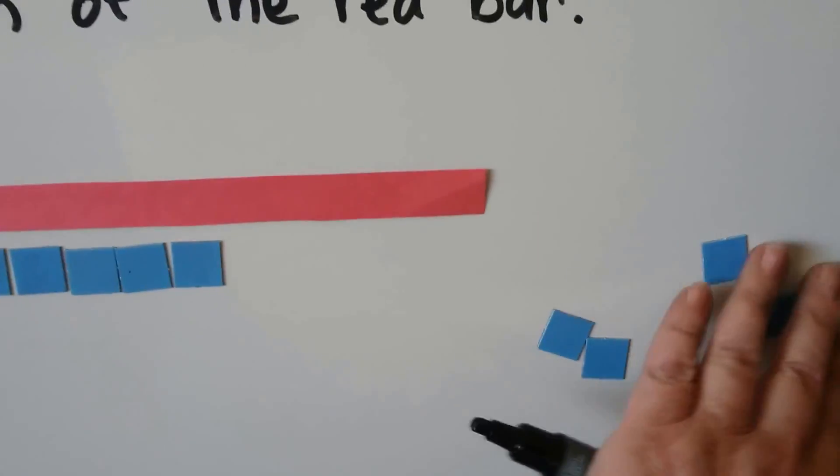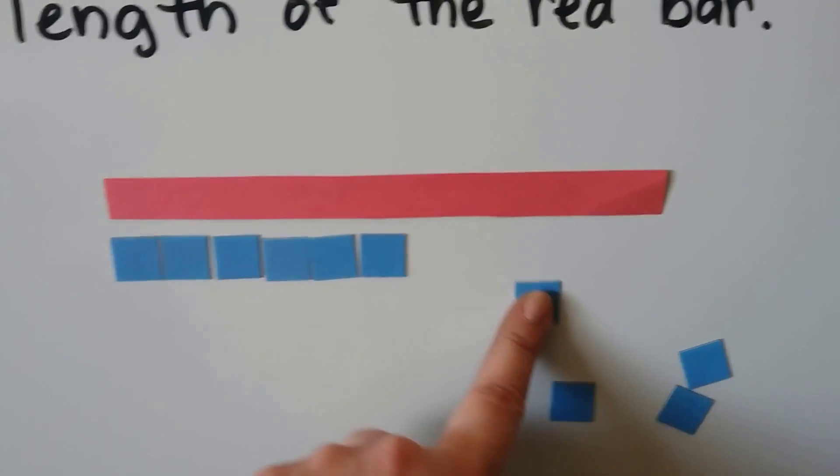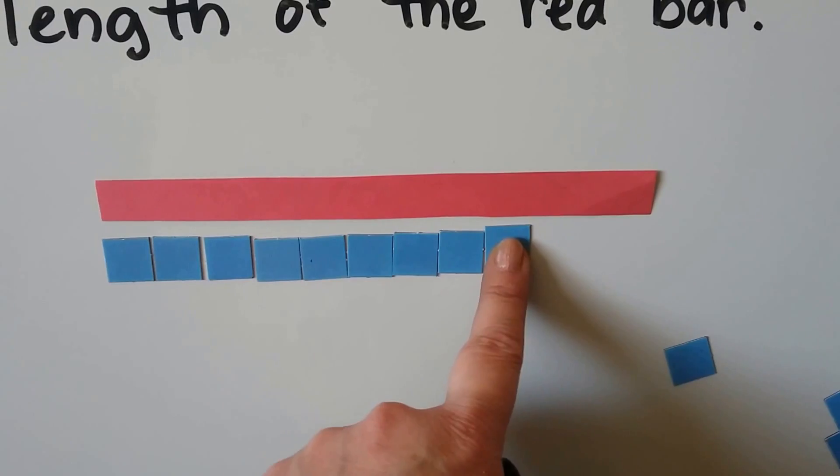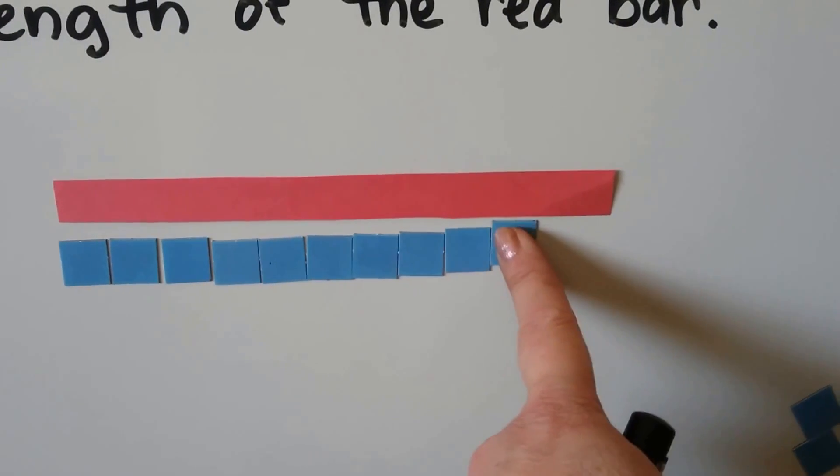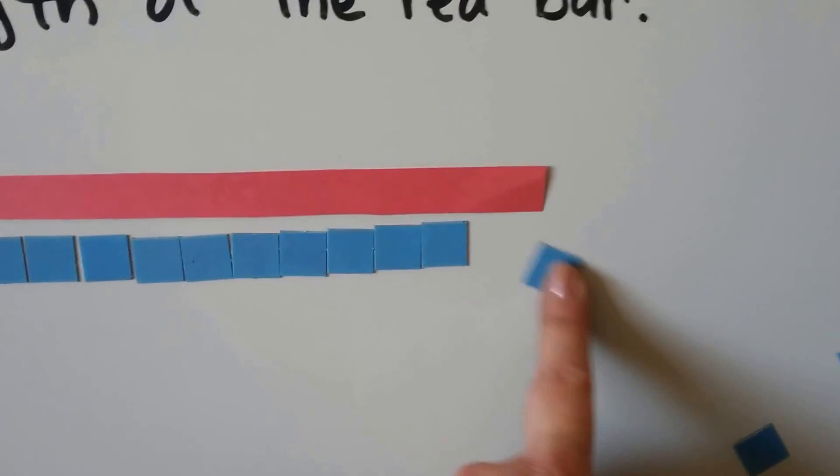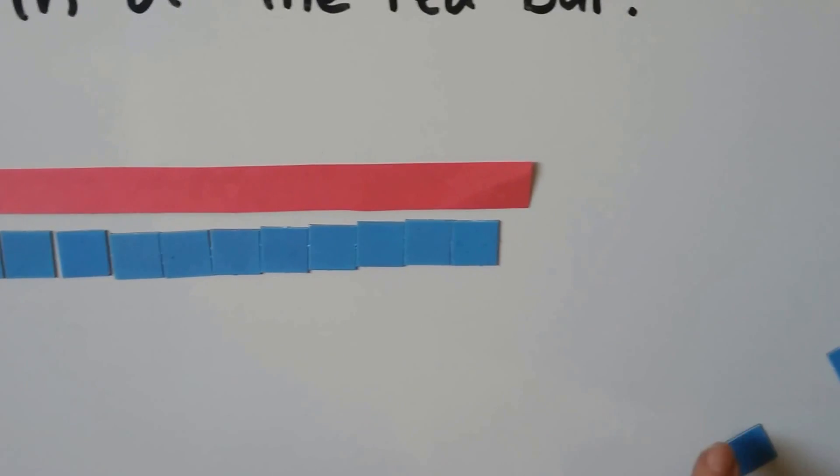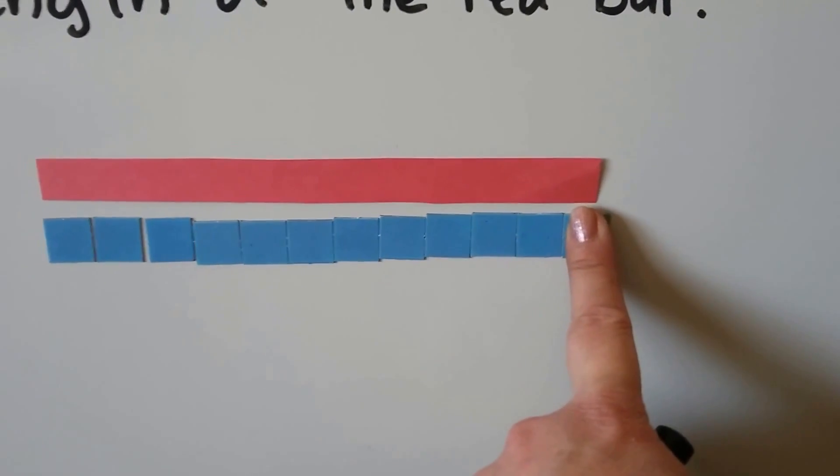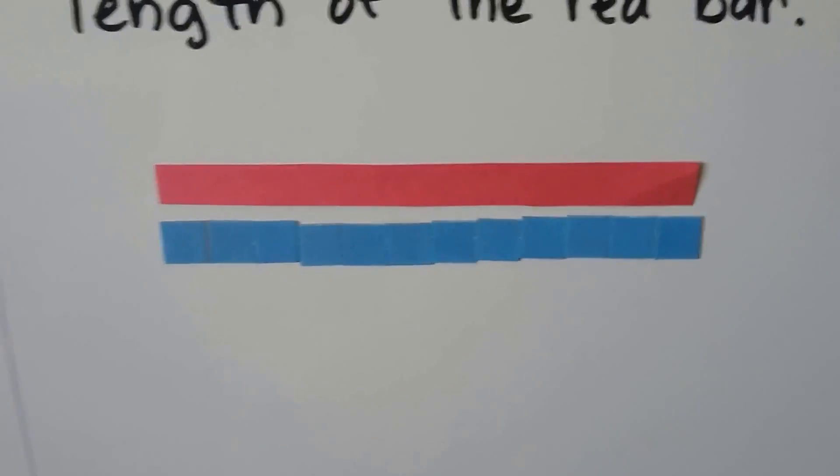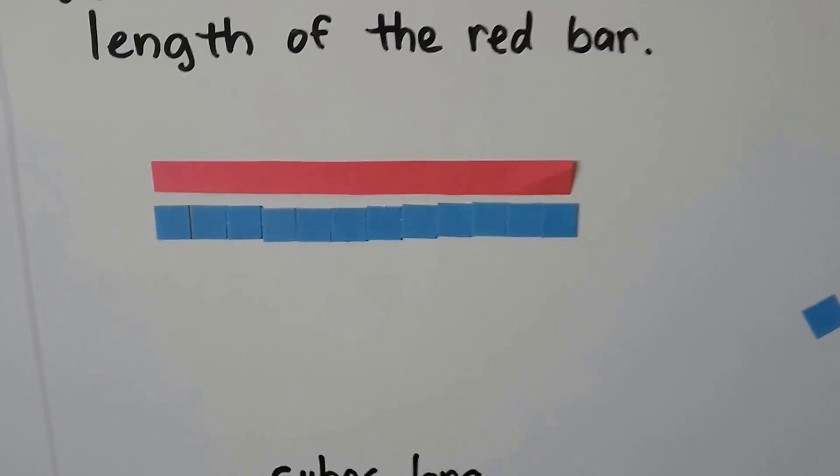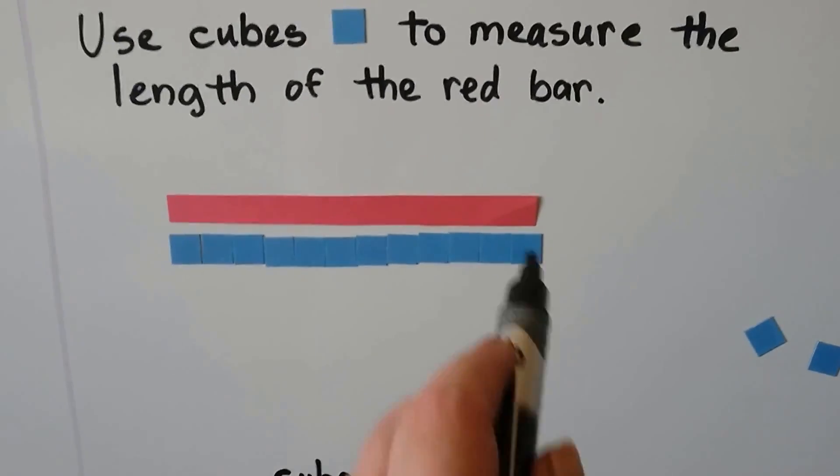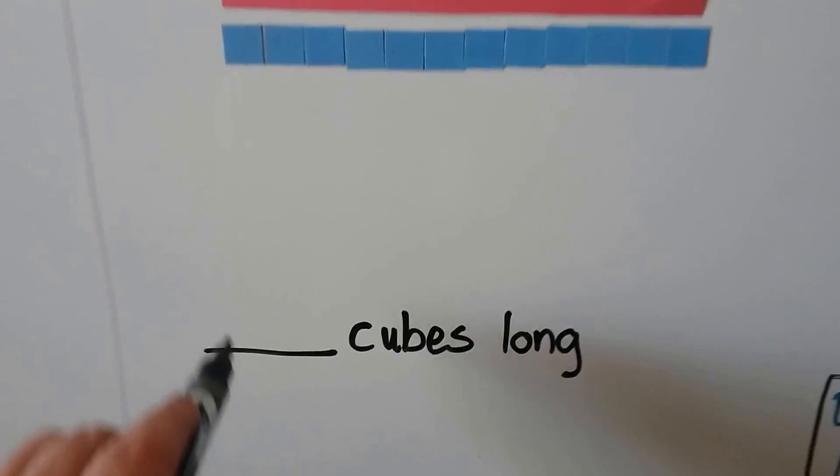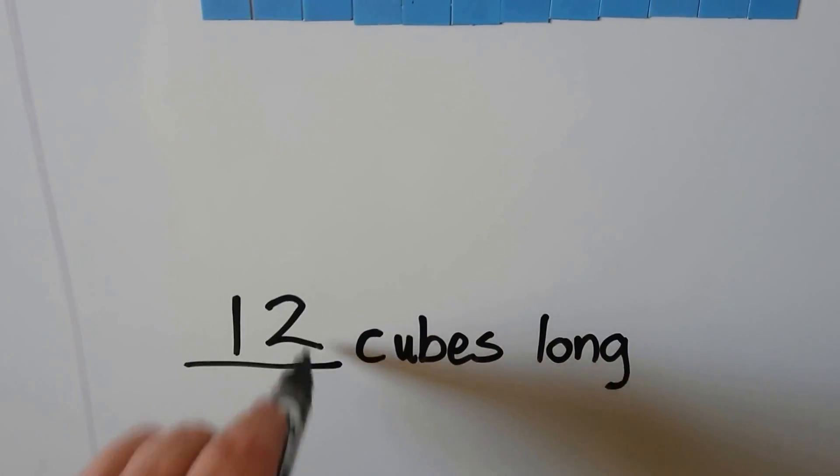Let's get some more. One, seven, eight, nine, ten, eleven, twelve. So it's about twelve cubes, isn't it? It's not exact. It's a little bit off, but it's about twelve cubes. The bar is about twelve cubes long.